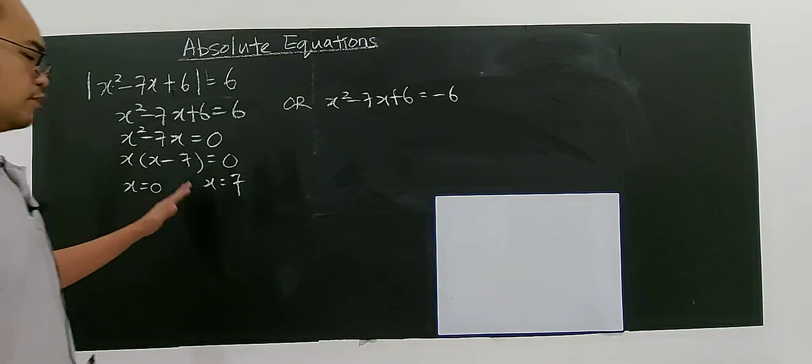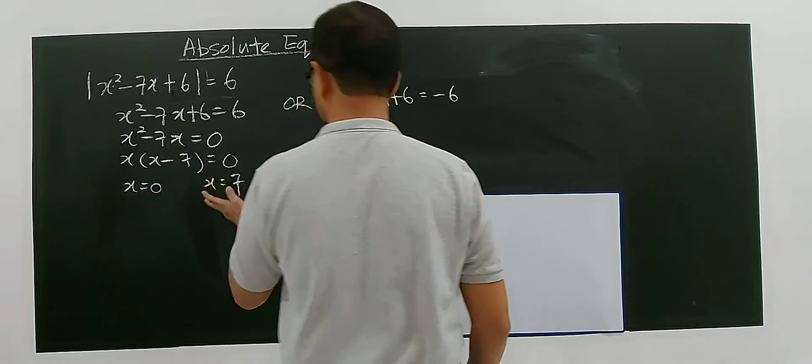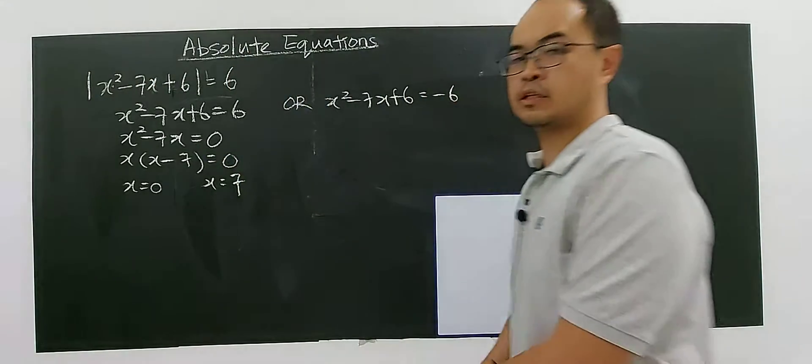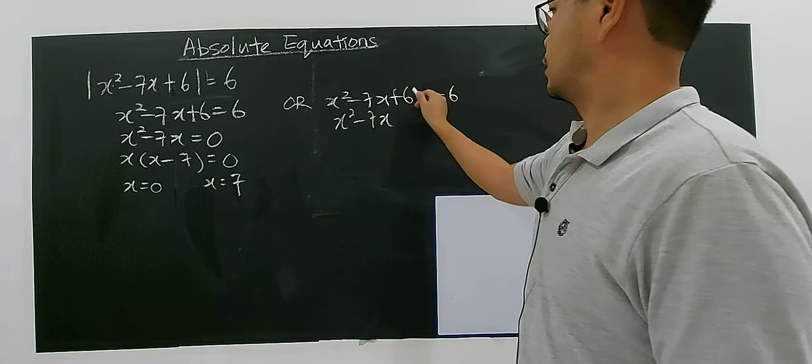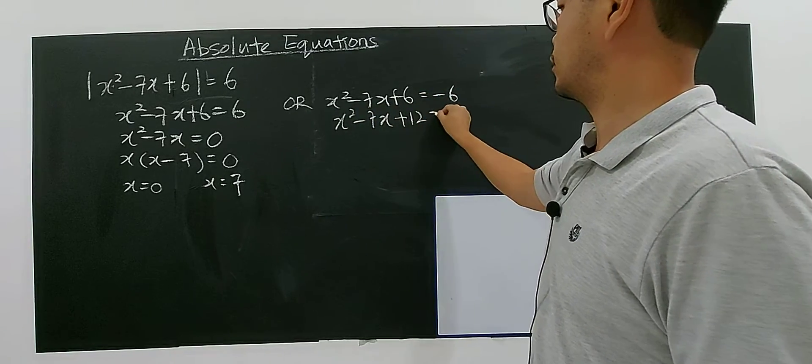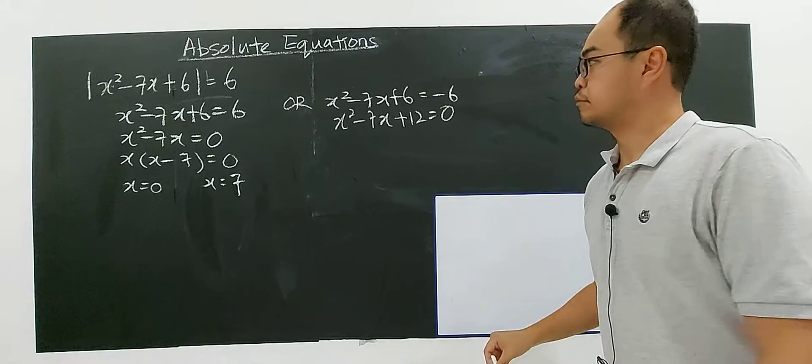Leave it first. Later we will check whether this solution satisfies the equation or not. So let's move on to this. You have x² - 7x + 12 = 0.